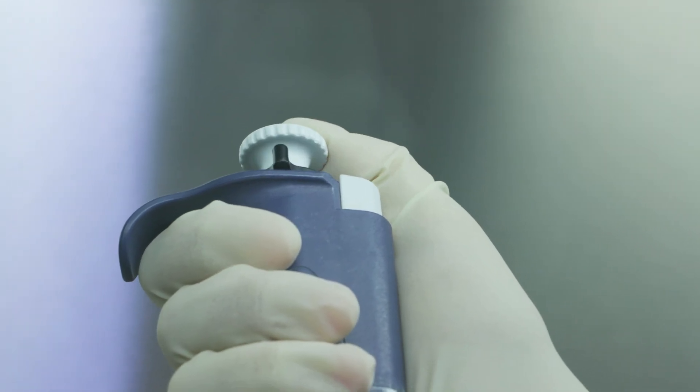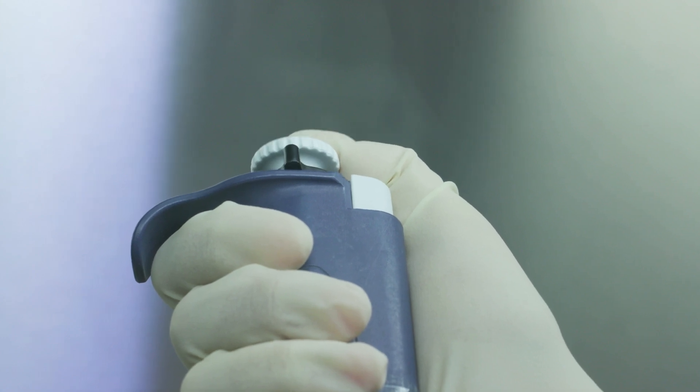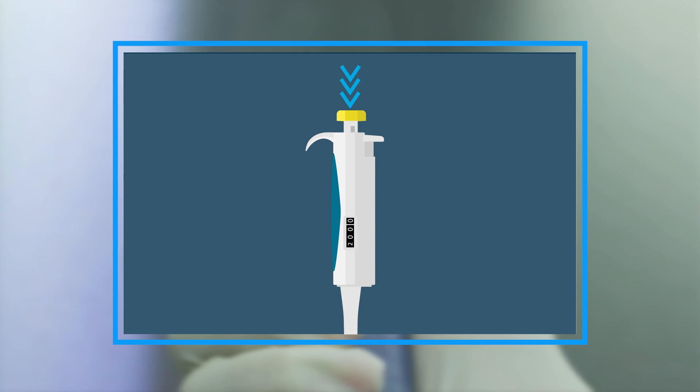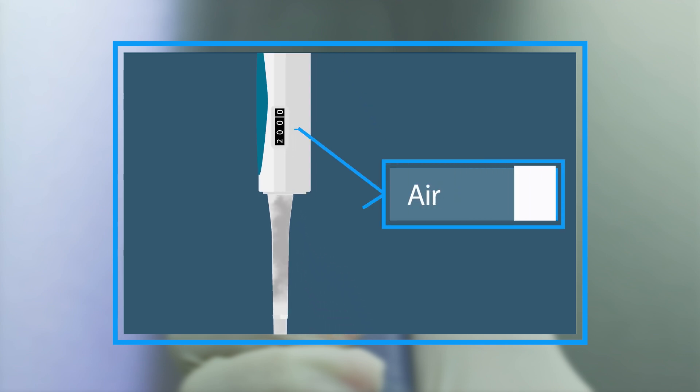The manual micropipet uses a piston and spring to create volumetric air displacement when the plunger is depressed. This means that the micropipet expels the exact air volume the user has set to display. This displacement creates a vacuum, and liquid is aspirated into the micropipet tip.